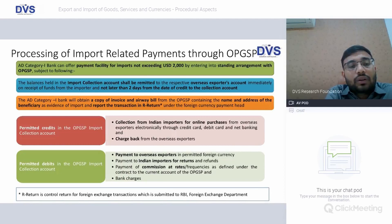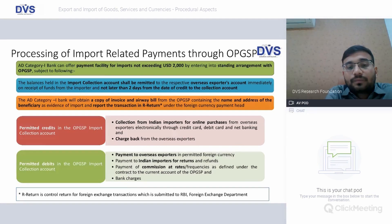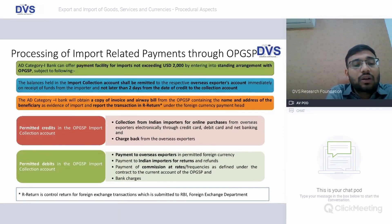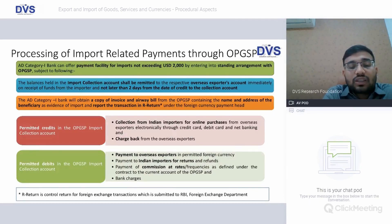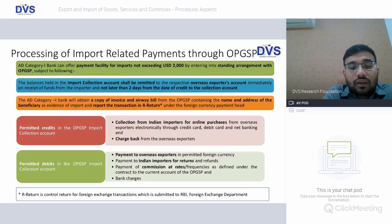For processing of import-related payments through OPGSP (Online Payment Gateway Service Providers): AD Category banks can offer payment facility for imports not exceeding USD 2 lakh by entering into a standard arrangement. The balance held in the import collection account shall be remitted not later than two days from the date of credit to the collection account. AD Category bank will obtain a copy of the invoice and airway bill from the OPGSP containing the name and particulars of the beneficiary as evidence of import, and report the transaction in the R-Return submitted to the RBI Forex Department. Permitted credits include: collections from Indian importers for online purchases, and chargebacks from overseas exporters. Permitted debits include: payment to overseas exporters, payment to Indian importers for returns, and payment of commission at rates and frequency as defined in the contract, and bank charges.